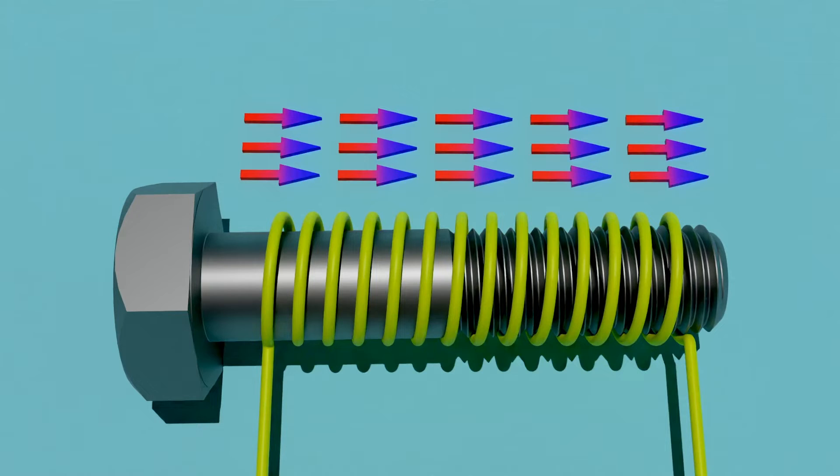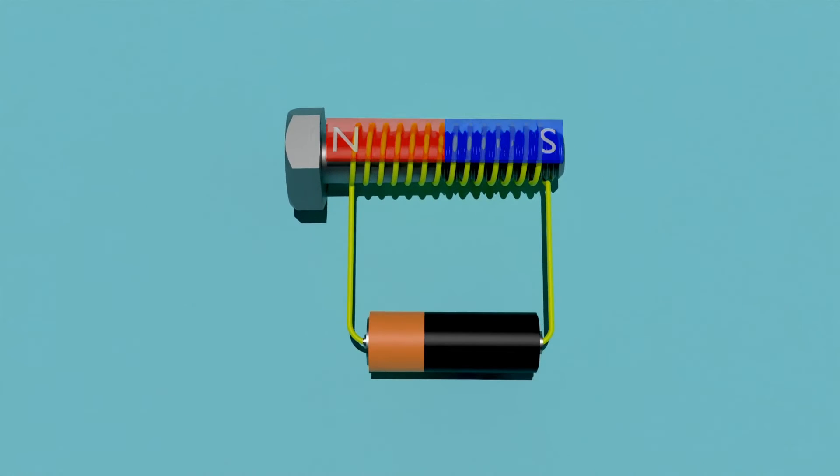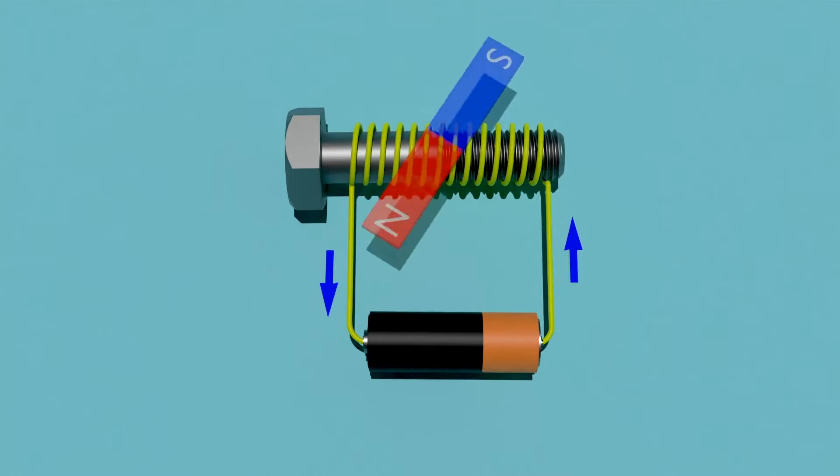In an electromagnet, the current flow is in one direction, and when we change the current flow, the electromagnet's polarity also changes. For example, when we switch the circuit's battery, the current flow changes, and the electromagnet's polarity also reverses.